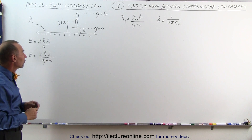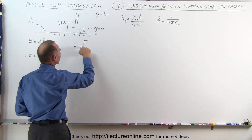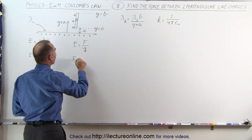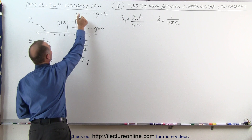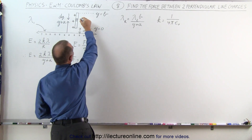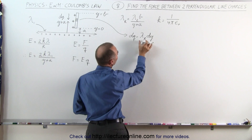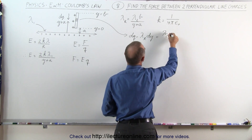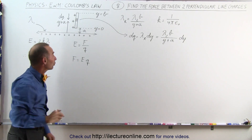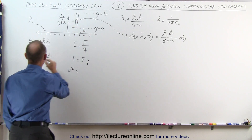So how do we find the force? By definition, the electric field equals the force on a test charge divided by the charge, so the force equals the electric field times the charge. For a small segment of the rod with length dy, the charge dq equals the charge density of the rod times dy. Since the charge density is λ₂·b over (y + a), we have dq = λ₂·b/(y + a)·dy.